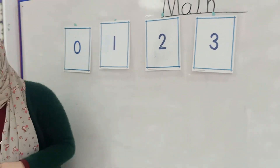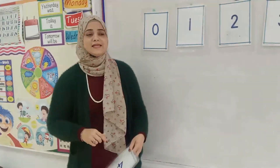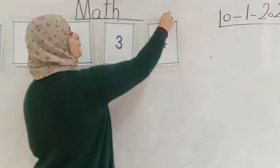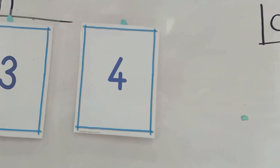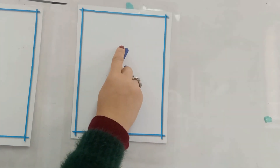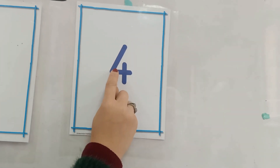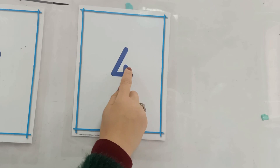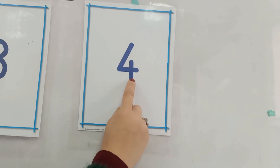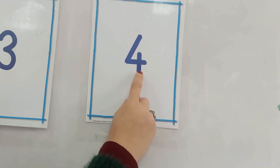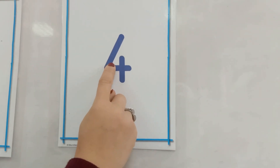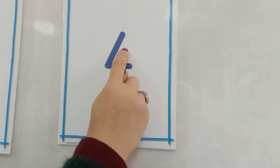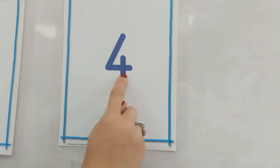What comes after number three, KG1? Yes, number four. Excellent. How do we write number four? Starting point, down stick, sleeping stick, and down stick again. Again, starting point, down stick, sleeping stick, and down stick again. Excellent.